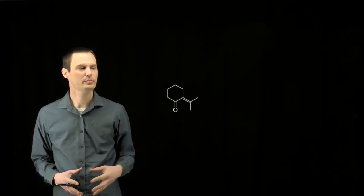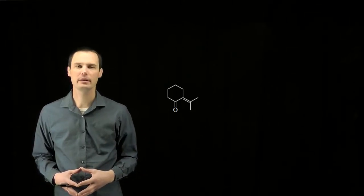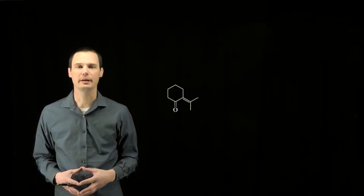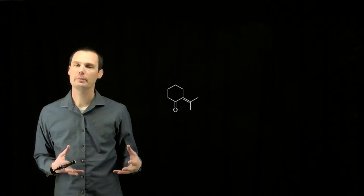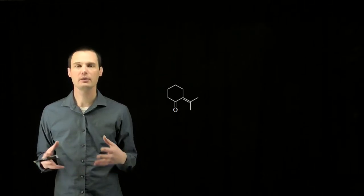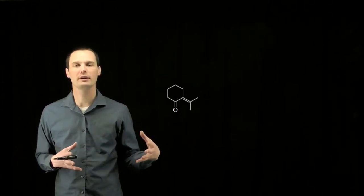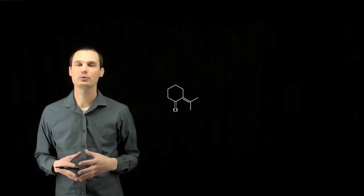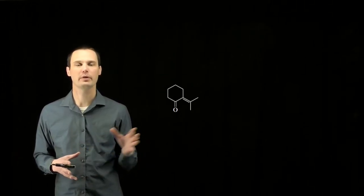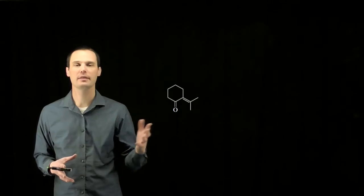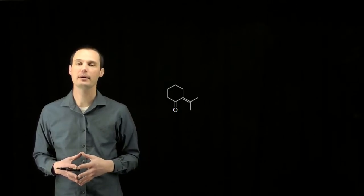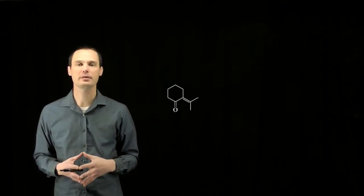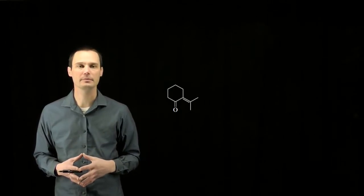This assessment asks us to determine whether or not this molecule is conjugated. In order to be considered conjugated, we need three or more consecutive atoms with p-orbitals where the electrons can then be stabilized by resonance through at least those three atoms.